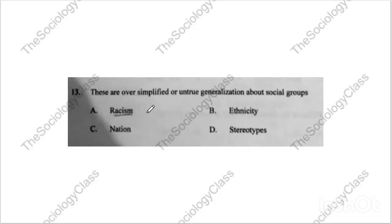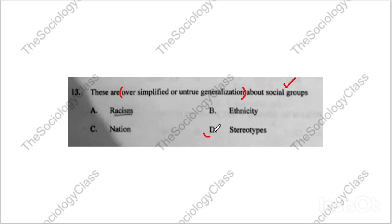Question number thirteen: 'These are oversimplified and untrue generalizations about social groups.' The options are racism, ethnicity, nation, or stereotype. The correct answer is D — stereotype.